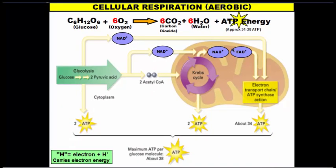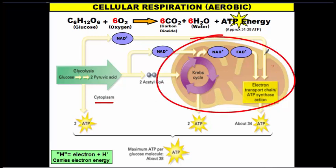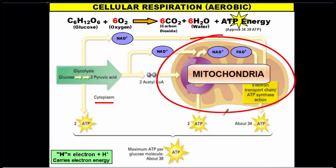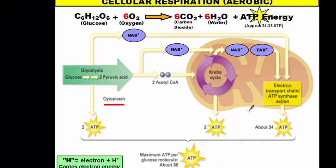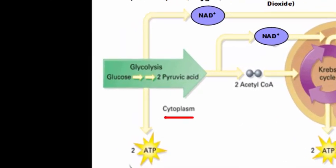Cell respiration occurs in two places: part of it occurs in the cytoplasm, and most of it occurs in this bean-shaped organelle called the mitochondria, which we learned about when we talked about cell organelles in our previous lessons. Let's go back out to the cytoplasm and talk about the first process.